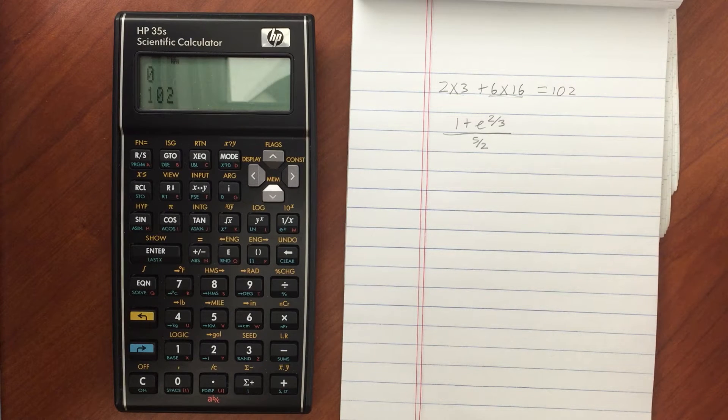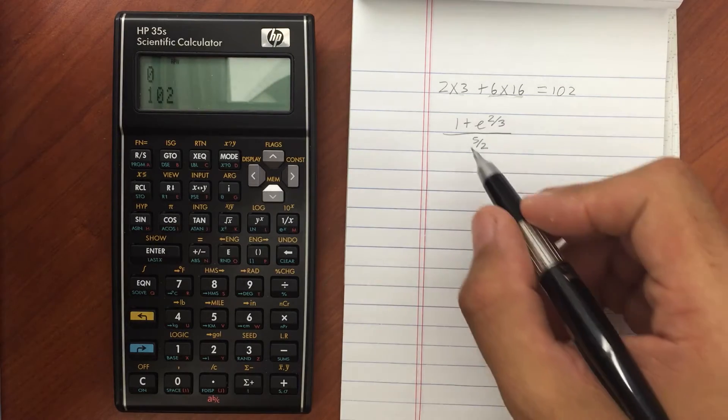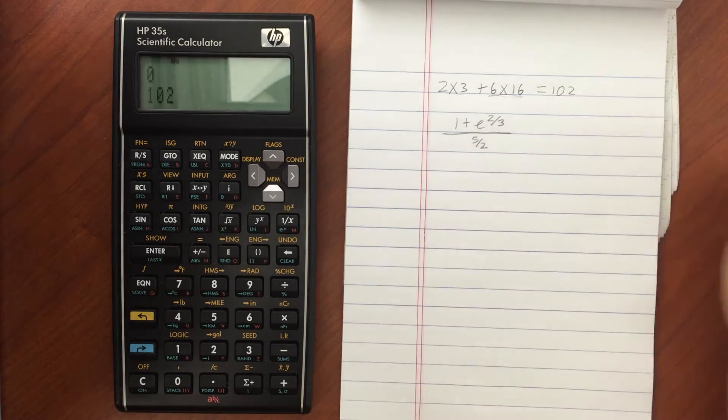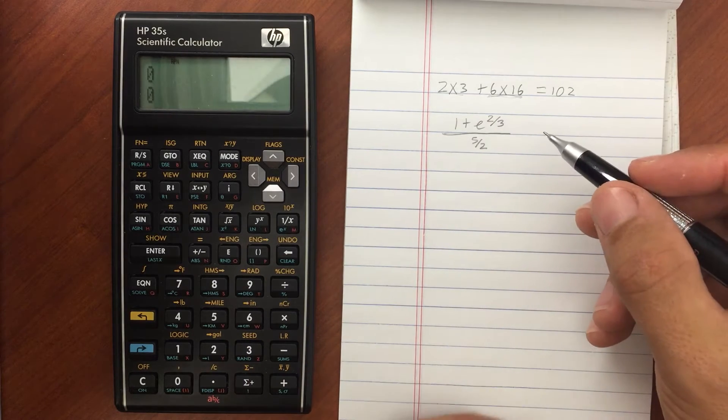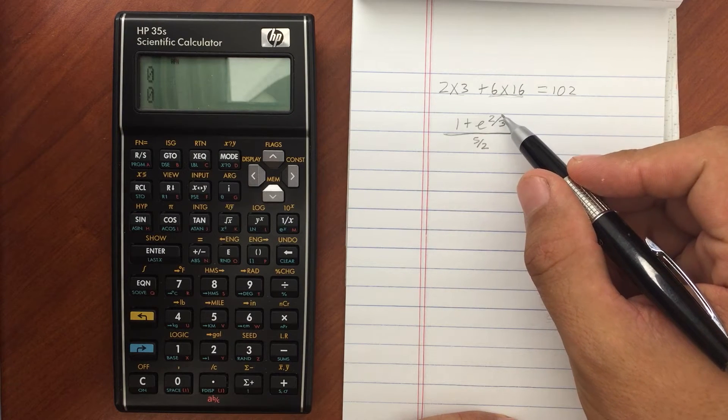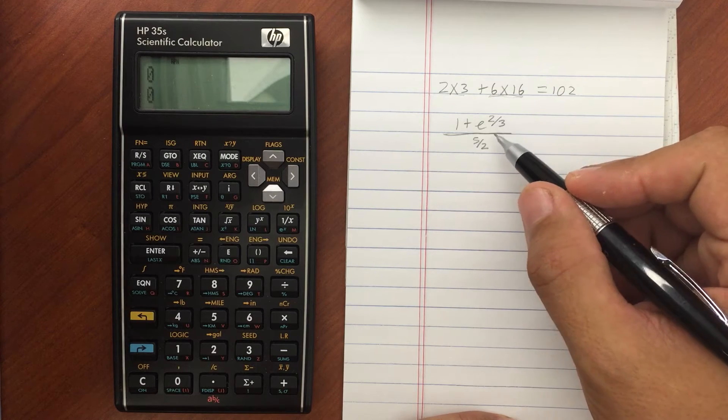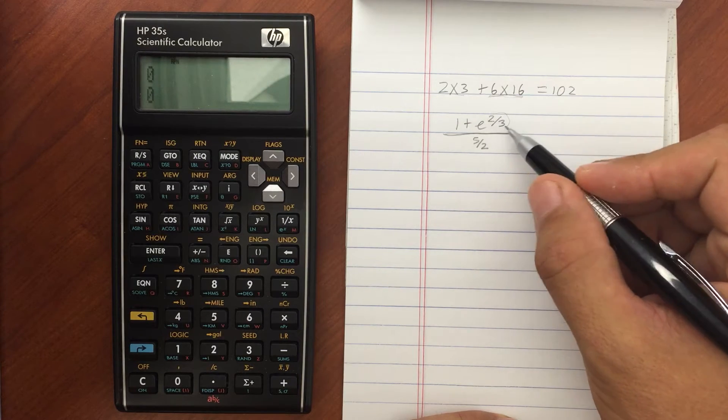With a typical infix notation, or algebraic, you'd have to have parentheses when you enter it. You have to put in parentheses for the numerator, the denominator. In RPN, you would calculate it just as you would if you were to calculate this manually. So you start from the inside out. So I would enter this first.